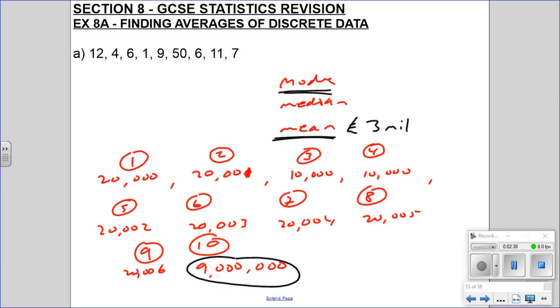Whereas if I use the mode, the most common number, the only common numbers are 10,000, so actually that's quite low. So I probably wouldn't use the mode, even though that is an average, if I wanted to say that.